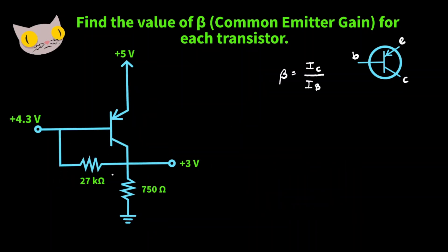Here's our next transistor circuit. Again, in order to find our common emitter gain, we're going to need the collector current over the base current. Our base current is here, and our current for the collector is here.